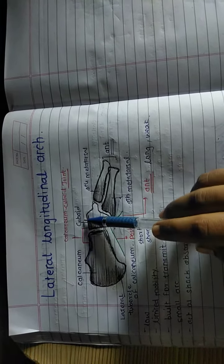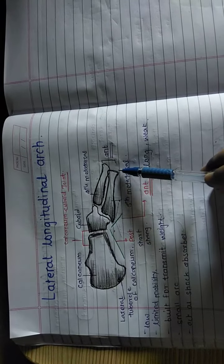It is formed by the bones that is the calcaneum, cuboid, fourth metatarsal and the fifth metatarsal.